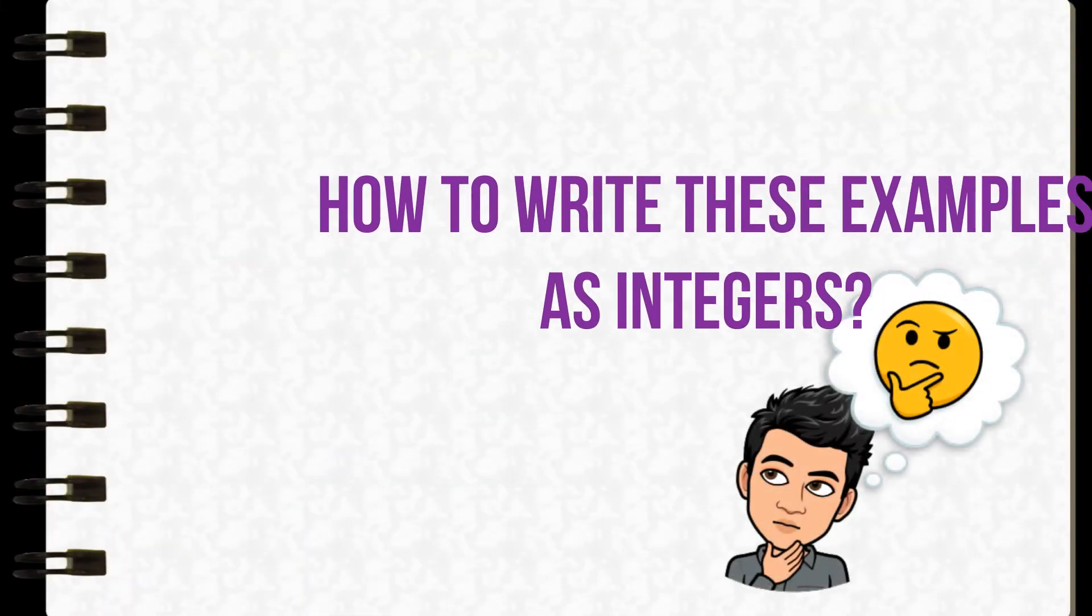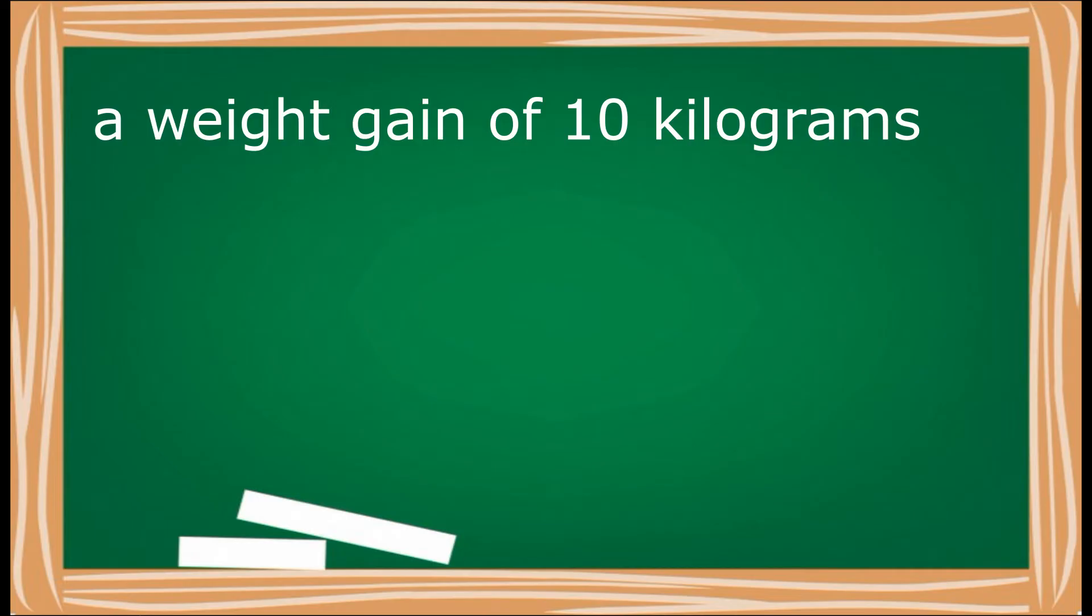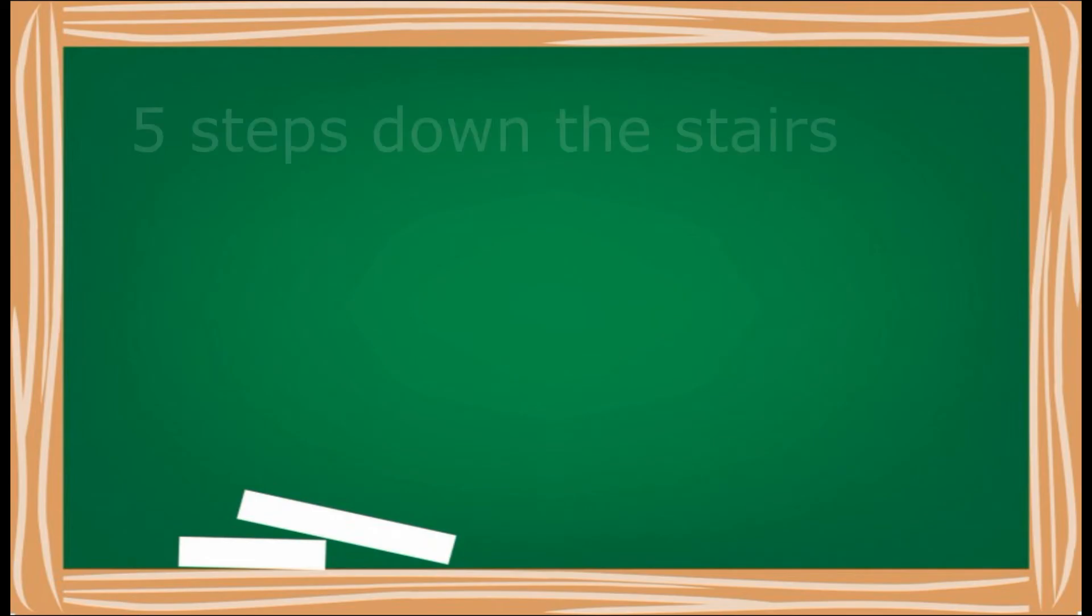But how to write these examples as integers? A weight gain of 10 kilograms can be written as an integer, positive 10. Diving a depth of 8 meters can be written as an integer, negative 8. Five steps down the stairs can be written as an integer, negative 5.